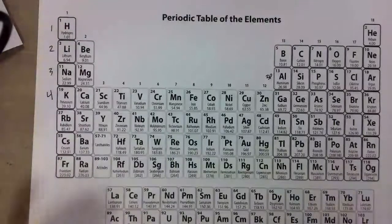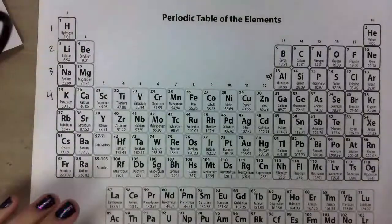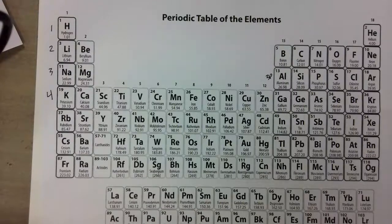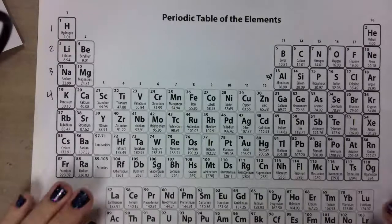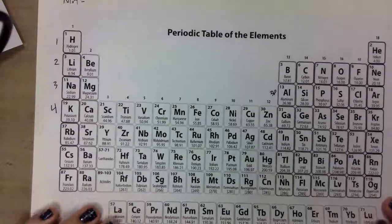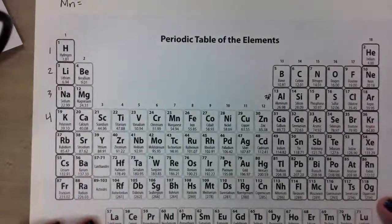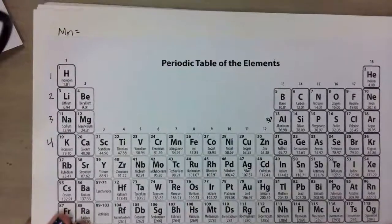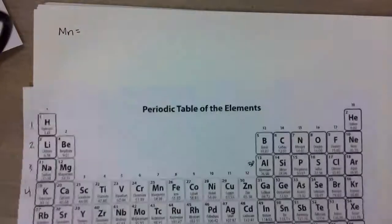Welcome back to part three of our electron configuration lessons for unit 1.4. We are going to be hitting the home stretch, clearing up some final things. I'm going to show you a shortcut to write some big elements' electron configurations, and then we're going to give you a bunch of practice. Hopefully you were getting the hang of things and we will be able to clear up any problems that you have. So to start off today, I want you to write the electron configuration for manganese.